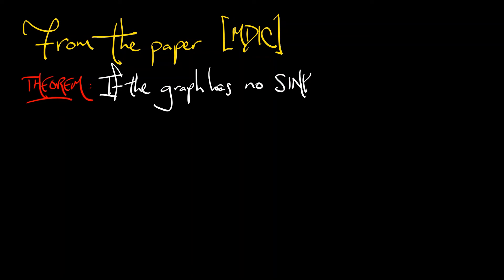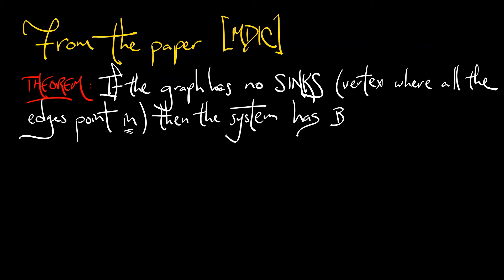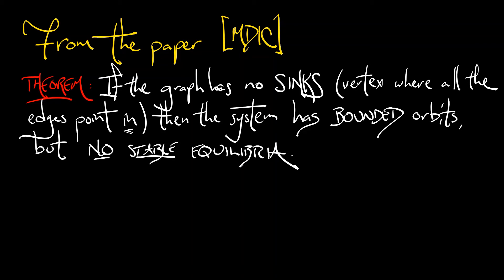So here's a result from that preprint that I mentioned. Theorem, if this directed graph has no sinks, and by sink I mean a vertex where all of the arrows point into it and nothing points out, then the system has bounded orbits, you don't fly off to infinity, but there are no stable equilibria. That's very interesting. What can happen?